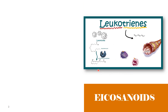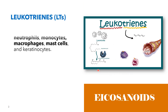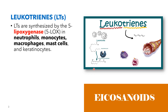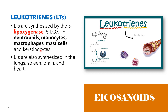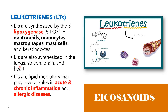So what are leukotrienes? Leukotrienes, or simply LTs, are synthesized by the 5-lipoxygenase pathway in neutrophils, monocytes, macrophages, mast cells, and keratinocytes. They are also synthesized in the lungs, the spleen, the brain, and the heart. They are considered to be lipid mediators that play pivotal roles in acute and chronic inflammation and allergic diseases.